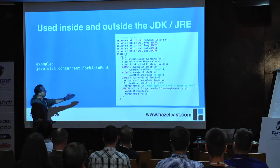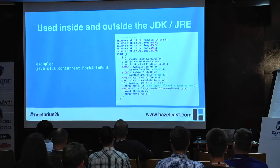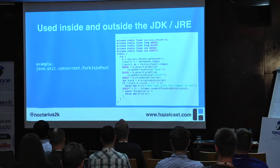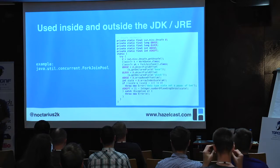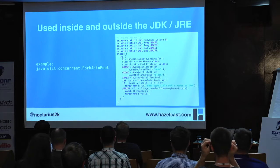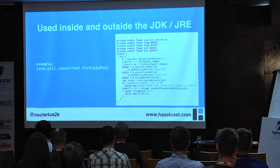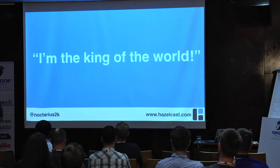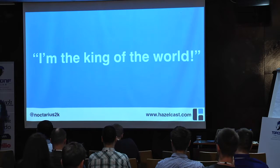Unsafe is used a lot inside the JDK — quite a lot. There's some unreadable code and some nicer code, like the ForkJoinPool added in Java 7. You can probably figure out that the person who wrote it comes from C++ or the C world. It goes so far that somewhere in the ThreadPoolExecutor source code there's a comment: 'I don't understand why, but Doug is probably right about that — in Doug we trust.'